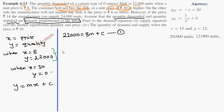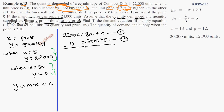Now let's write the second equation. When X is 30, Y is 0, so: 0 = 30M + C. This is the second equation. Now subtract the second from the first — the C terms cancel — giving us: 22,000 = −22M.